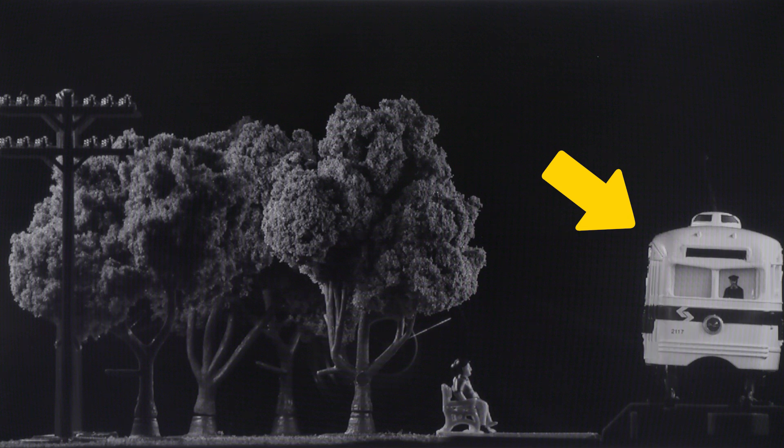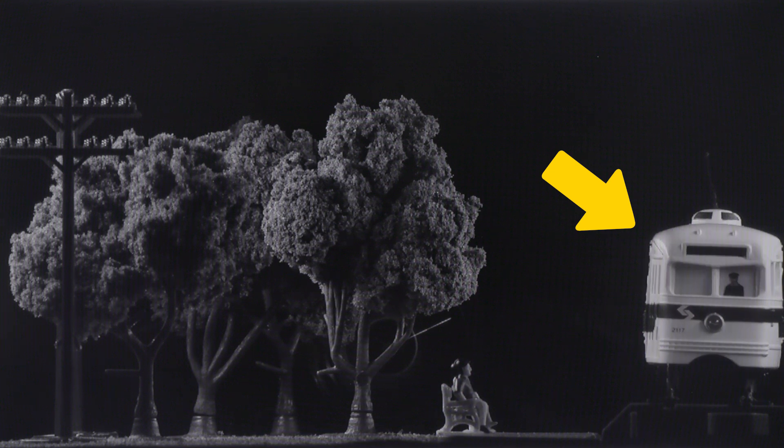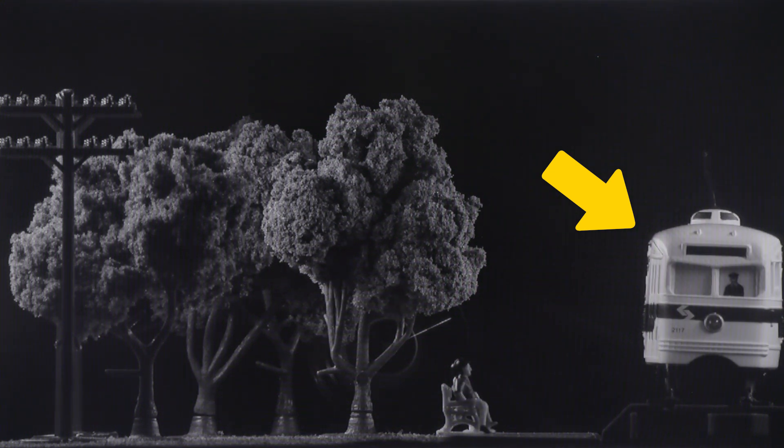When viewed through the telecentric lens, you cannot tell the direction that the train is moving or how far away it is from the lens. It never changes size regardless of where it moves and you can only see the front of the train.